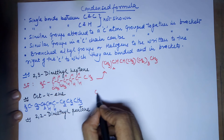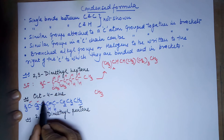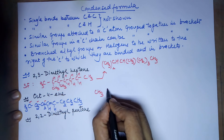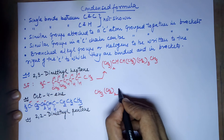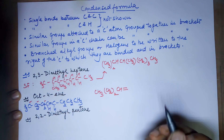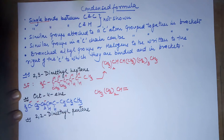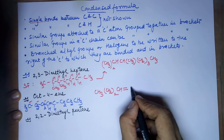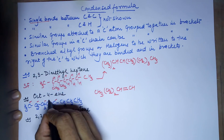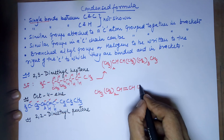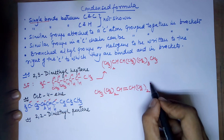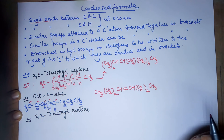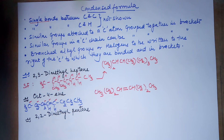To write the condensed formula of this structure: begin with CH3, then you have two CH2s together, grouped as (CH2)2. Next you have a CH — the double bond is to be shown, only single bonds are not shown — so CH=CH. Then again two CH2s in a row, grouped as (CH2)2, and finally a CH3.